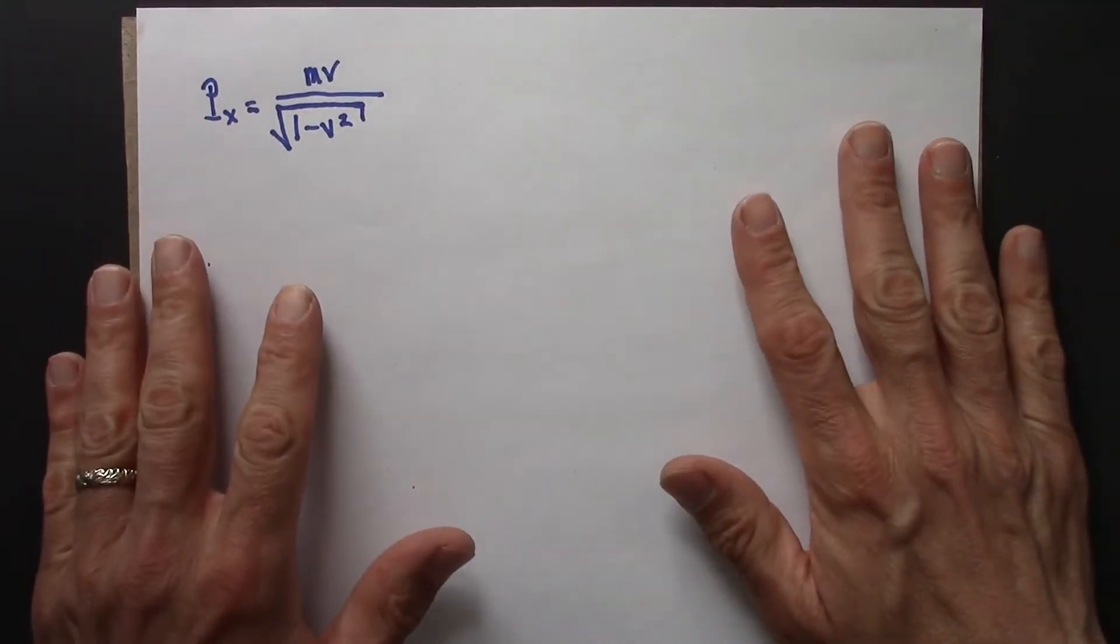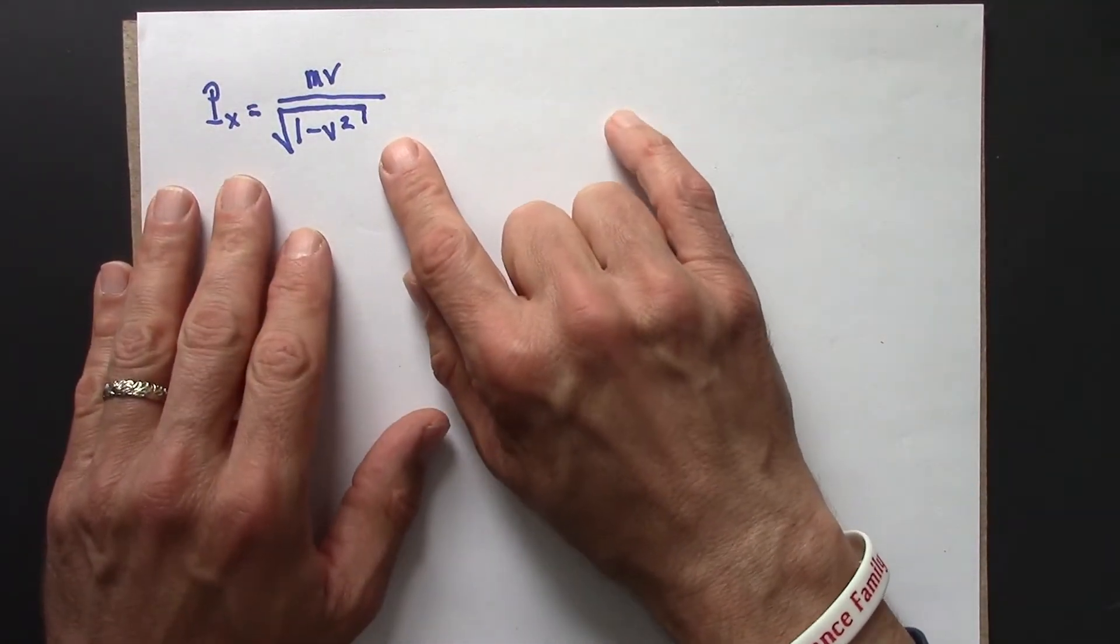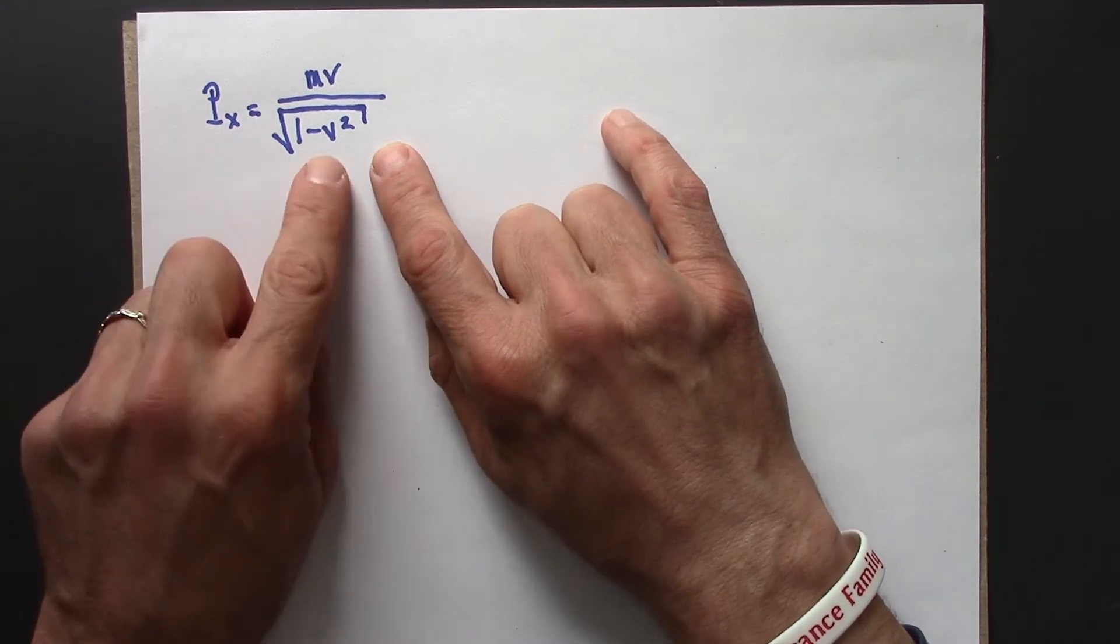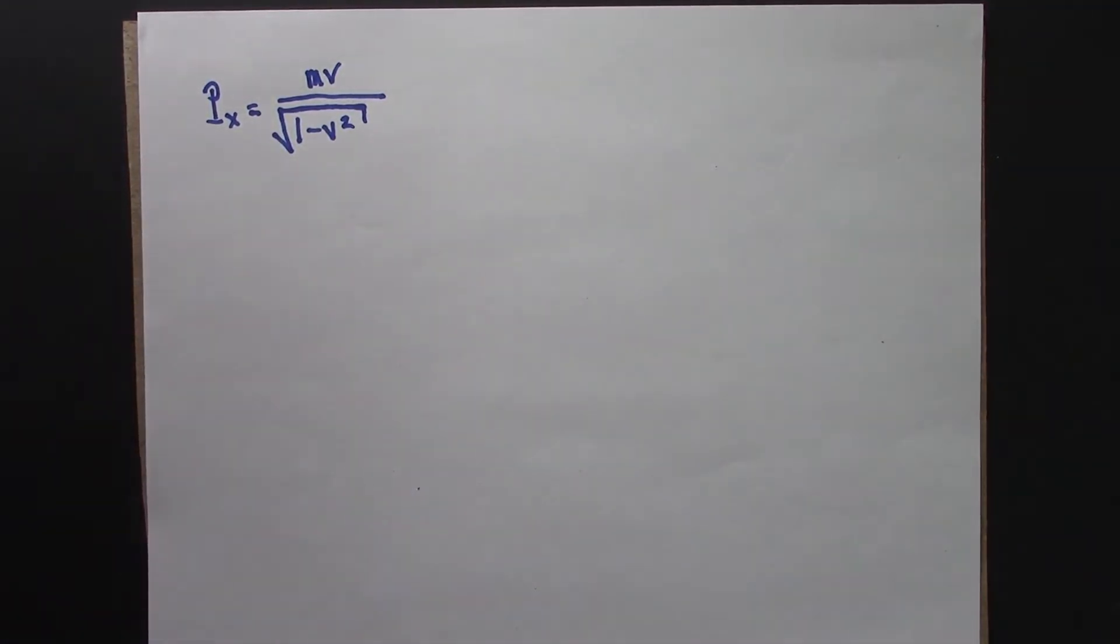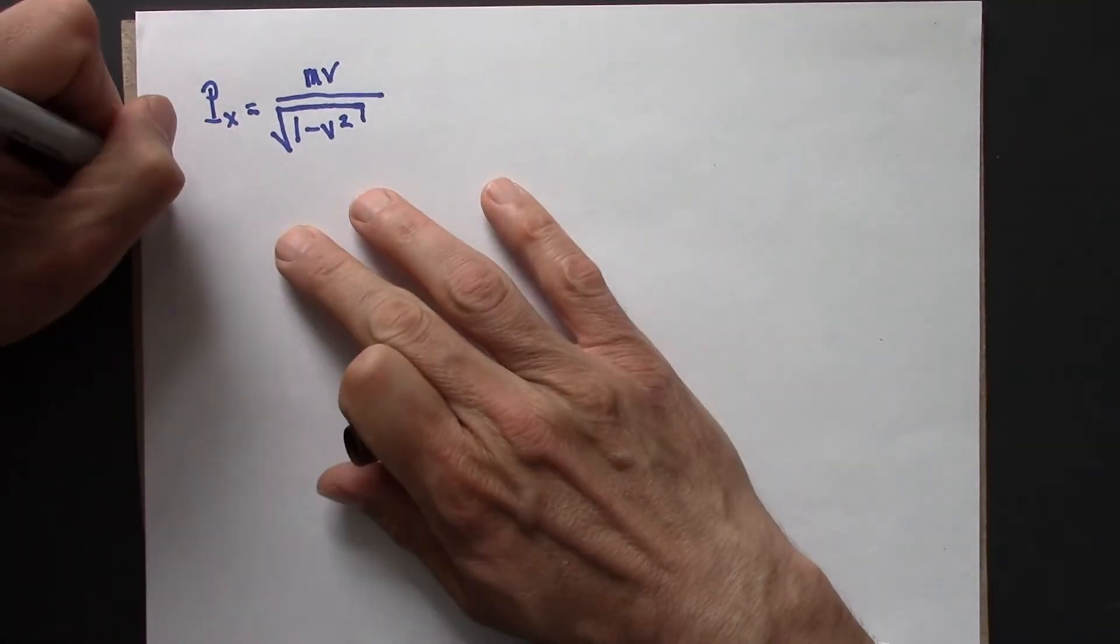So let's start with this equation, and this is an equation for the x-component of momentum. We would interpret this as the relativistic momentum.